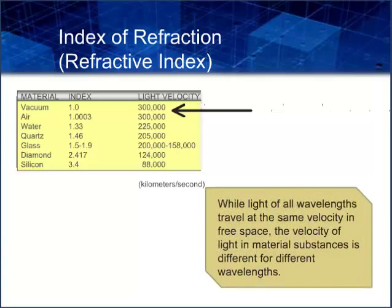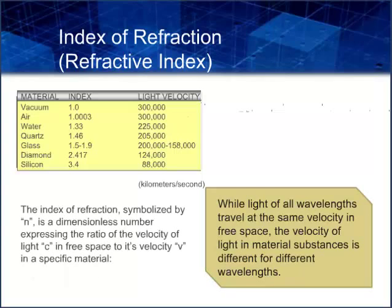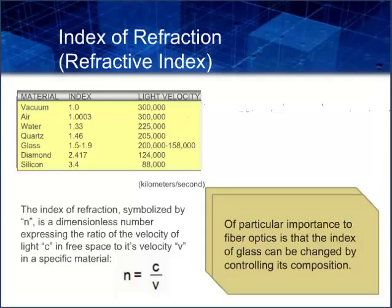While light of all wavelengths travels at the same velocity in free space, the velocity of light in material substances is different for different wavelengths. The index of refraction, symbolized by N, represents the ratio of the velocity of light C in free space to its velocity V in a specific material: N = C / V. Of particular importance to fiber optics is that the index of glass can be changed by controlling its composition. Glass has a variable index from 1.5 to 1.9.